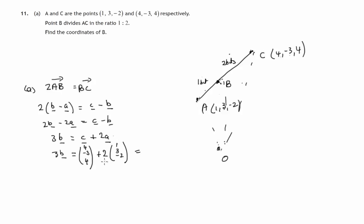Now let's work out the right hand side components. Let's take the x components: 4 plus 2 lots of 1, that's 6. The y components: -3 plus 2 lots of 3, that's -3 plus 6, that's 3. And the z components: 4 plus 2 lots of -2, that's 4 plus -4, that's 0. Now if that's 3 times vector B, then vector B is 1/3 of (6, 3, 0), which means it's (2, 1, 0).